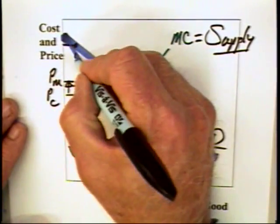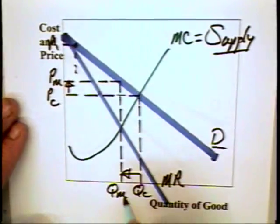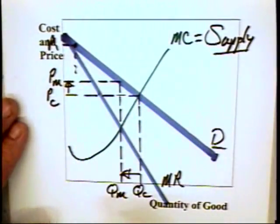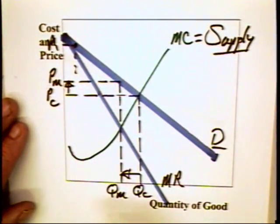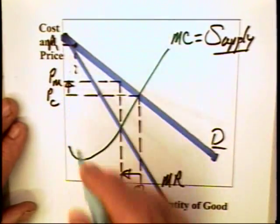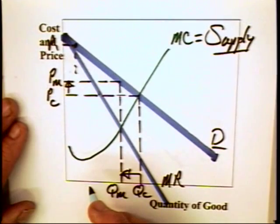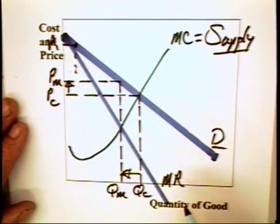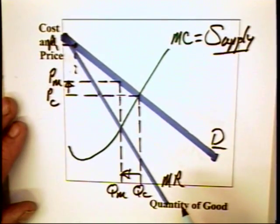If a firm charges this kind of price, P1, then it will be losing out on profits. Its stock price will suffer. Some savvy entrepreneurs will buy the firm and actually lower the price to PM. Profits can go up. The stock price can go up. And those savvy investors can make money.